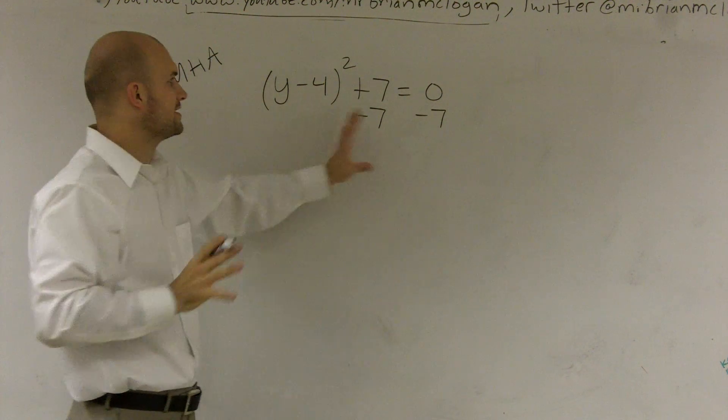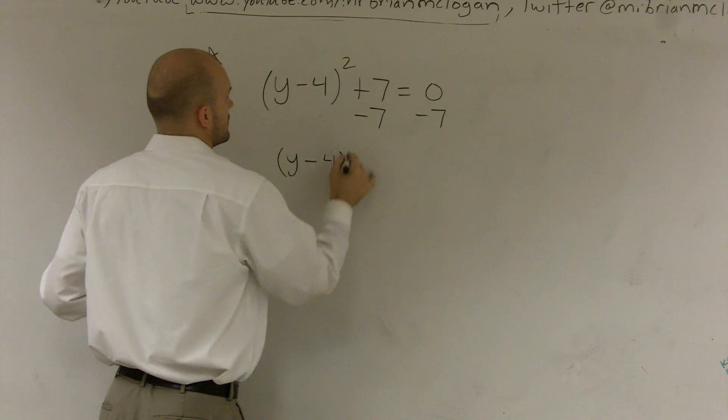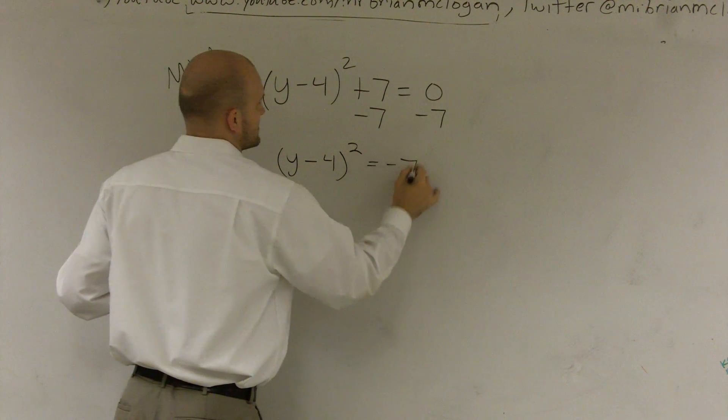Remember, I want to get everything away from this y. So I have (y - 4)² equals negative 7.